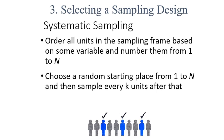The second technique is systematic sampling. Researchers order all units in the sampling frame based on some variable and assign numbers from 1 to N. Looking at the picture, the blue individuals are selected — the first two are skipped, the third is selected, two are skipped, the sixth is selected. After every two persons, one person is selected for the survey. This is the systematic approach.